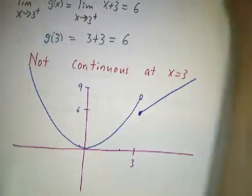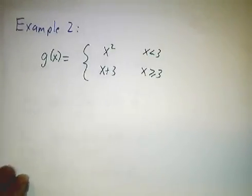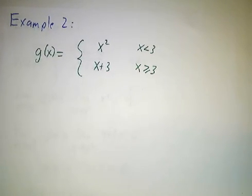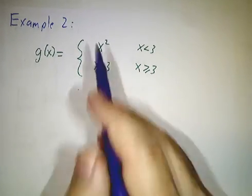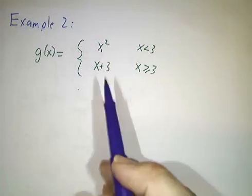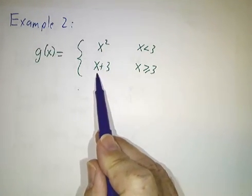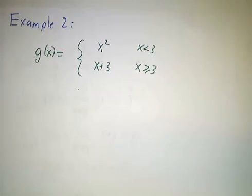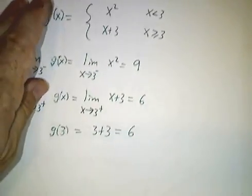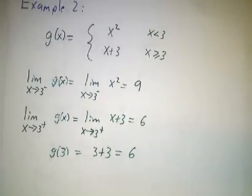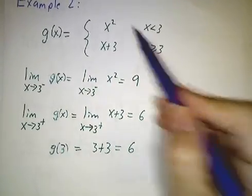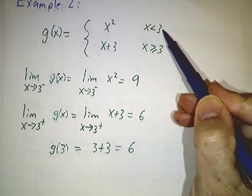On the other hand, this function is not. If we look at x less than 3, no problem, x squared is continuous. x bigger than 3, no problem, x plus 3 is continuous. But at x equals 3, the limit from the left, we have to use this formula, and we get 9.